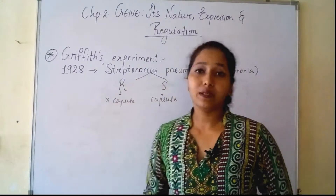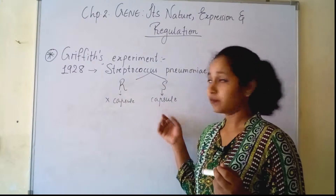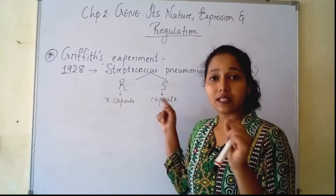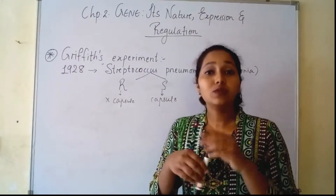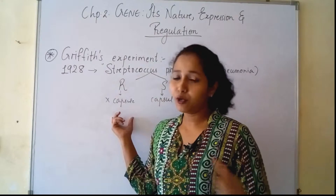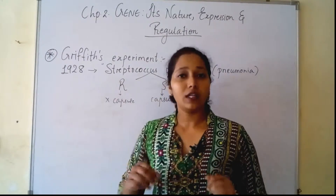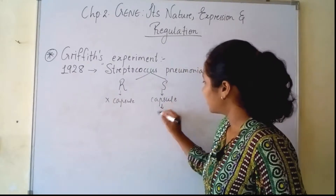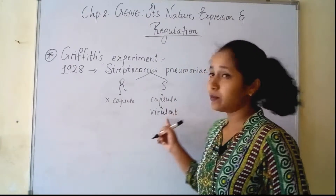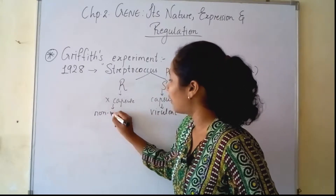Streptococcus pneumoniae are of two types: rough strain and smooth strain. The smooth strain produces a capsule, because of which smooth colonies are formed on agar. Whereas the rough strain does not produce a capsule, because of which rough colonies are formed on agar. The smooth strain is a virulent type, meaning it is capable of causing disease, whereas the rough strain is non-virulent.